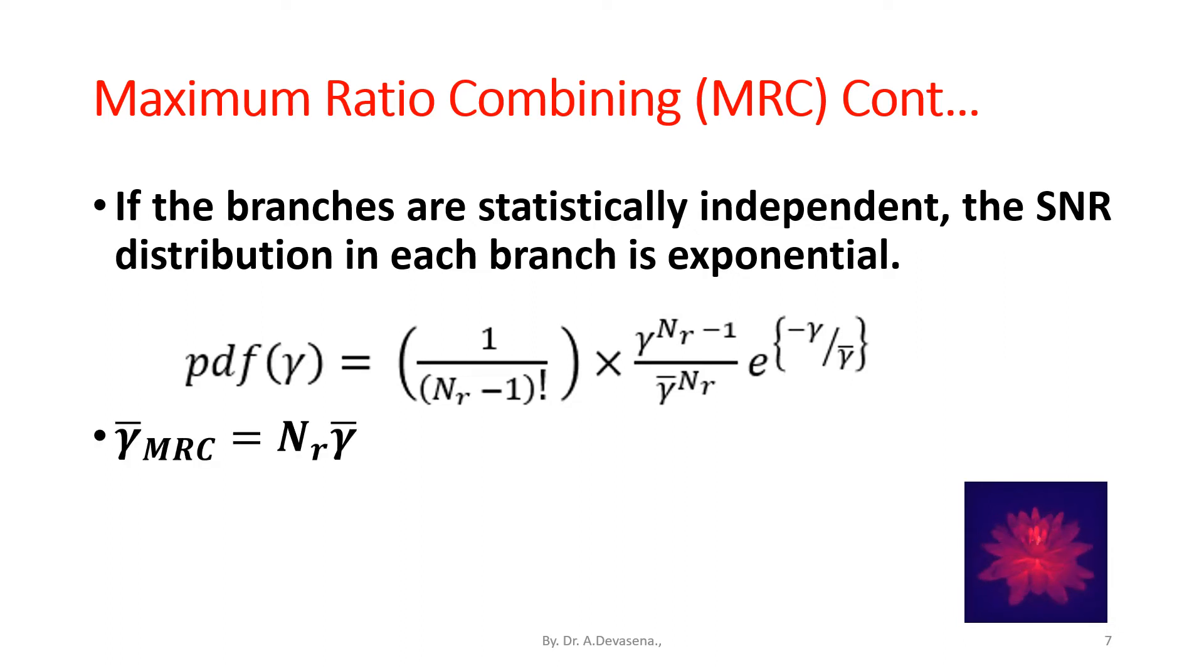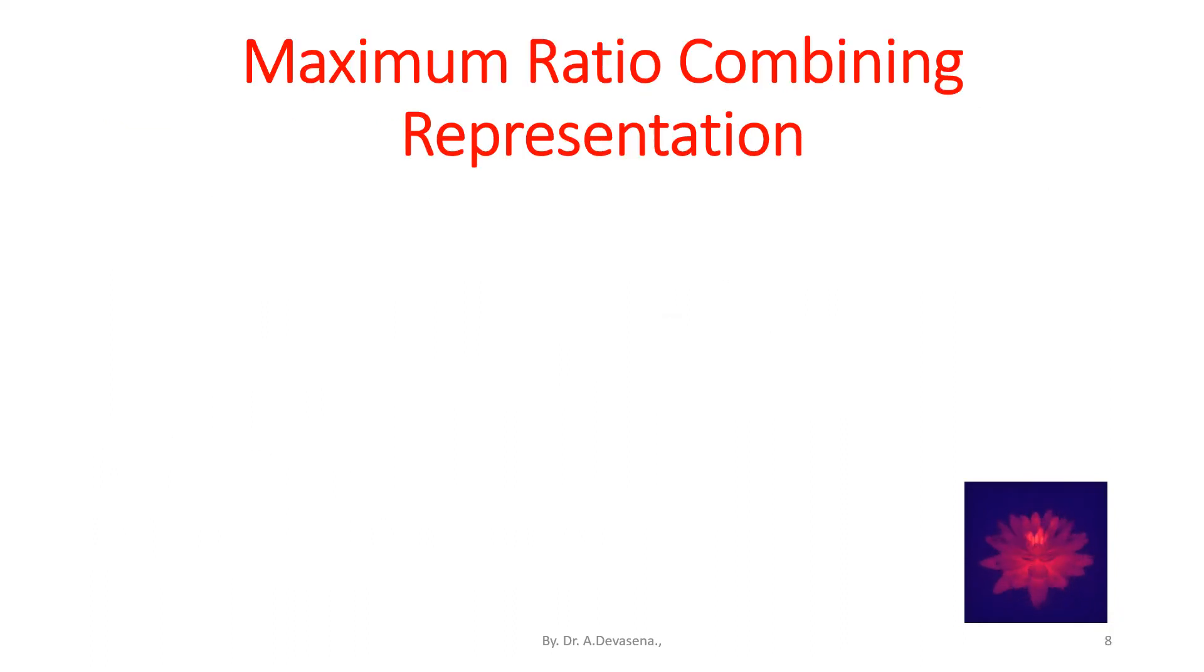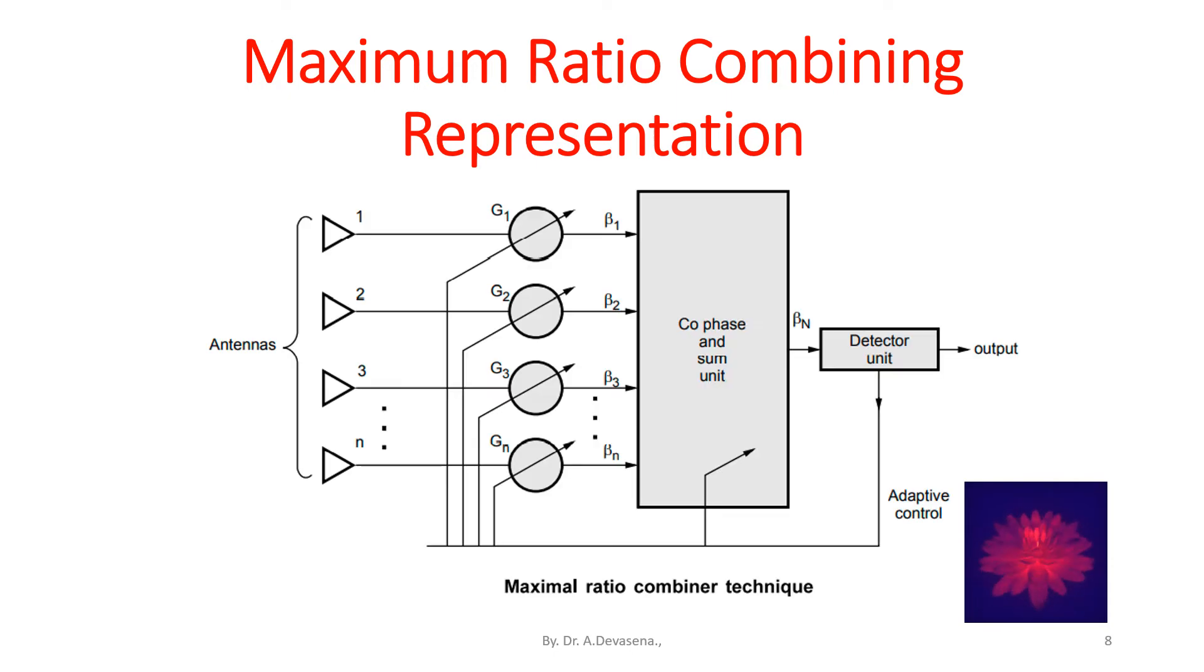Gamma bar of MRC is equal to N_R gamma bar. For N_R is equal to 1, there is no diversity. For N_R is equal to 3, diversity is applied. Maximum ratio combining representation is shown in this diagram.